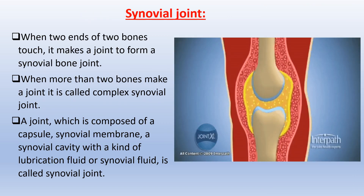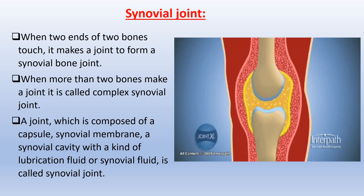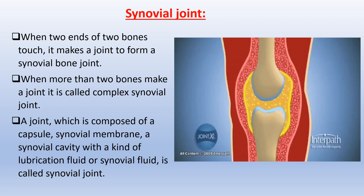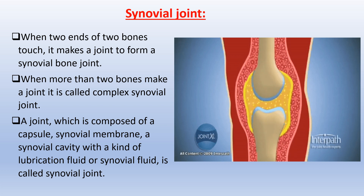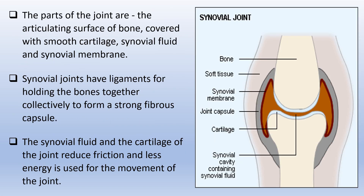Synovial Joint: When the ends of two bones touch, they make a joint to form a synovial bone joint. When more than two bones make a joint it is called a complex synovial joint. A joint composed of a capsule, synovial membrane, a synovial cavity with a lubrication fluid called synovial fluid is called a synovial joint. The parts of the joint include the articulating surface of bone covered with smooth cartilage, synovial fluid, and synovial membrane. Synovial joints have ligaments for holding the bones together to form a strong fibrous capsule. The synovial fluid and cartilage reduce friction so less energy is used for movement.